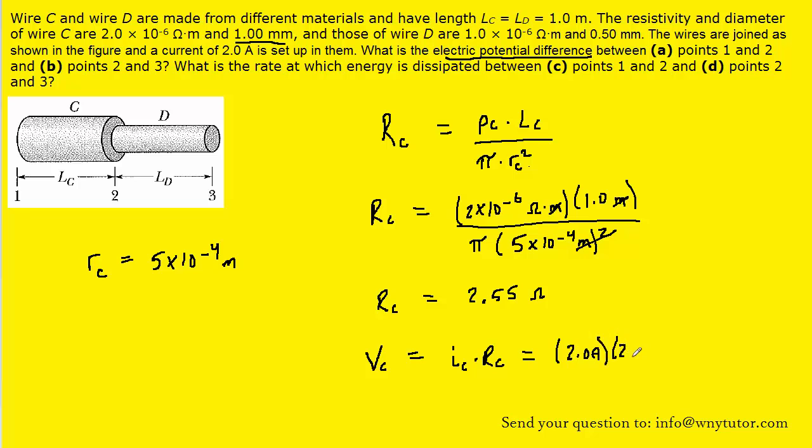So we can plug that in for the current, and then the resistance, of course, we just determined. When we multiply those values out, we get a potential difference of approximately 5.1 volts. So this will be the correct answer to part A.